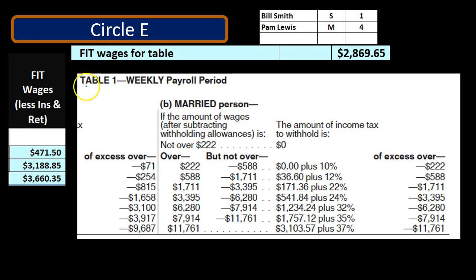Now we're back to the Circular E in the percentage area. Unlike the standard tables where we'd just look up a number, here we have to find the correct tax bracket that our amount falls in, then calculate the top tier and add it to the amount already calculated for the tiers below.